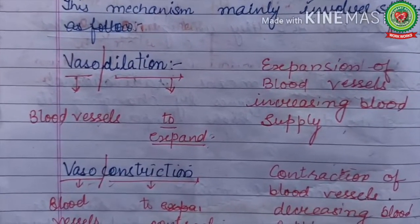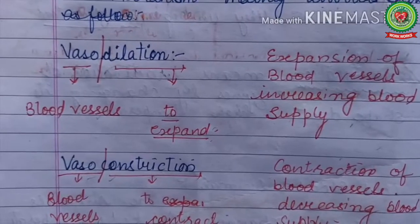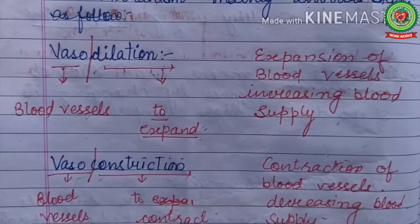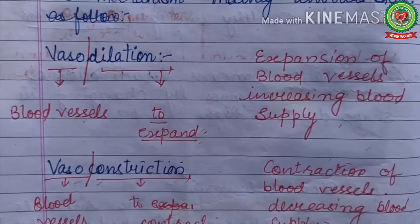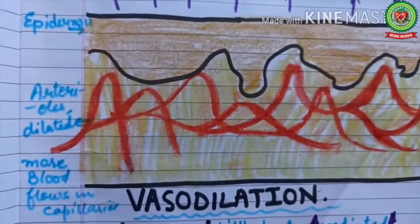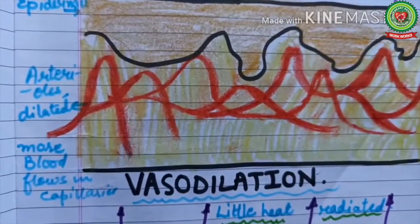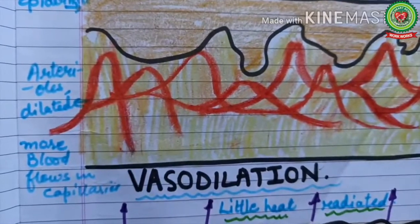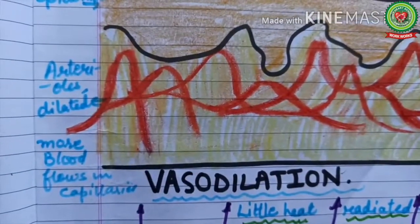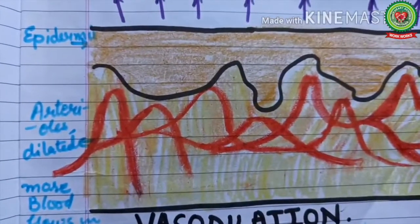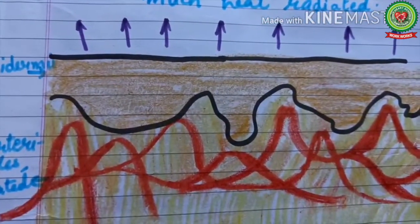There are two important terms: vasodilation and vasoconstriction. Vaso means blood vessels; dilation means to expand. Vasodilation means expansion of blood vessels, which increases blood supply towards the surface of the skin. When blood vessels expand, more blood flows towards the skin surface and maximum heat is lost in the form of sweat. This process occurs during summer season.